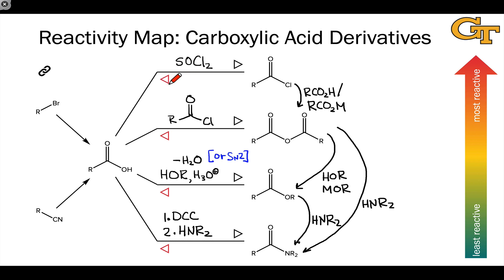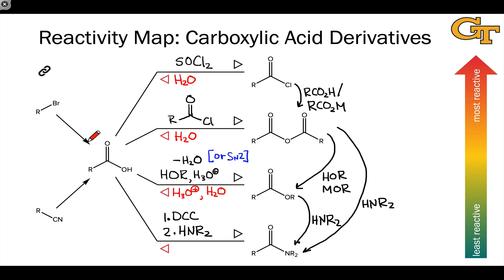What about the reverse directions? From an acid chloride to a carboxylic acid, that's simply water — acid chlorides are sensitive to water and react spontaneously. From an anhydride back to a carboxylic acid, use water, sometimes with an acid or base catalyst. From an ester back to a carboxylic acid, essentially reverse Fischer esterification: catalytic acid with a large excess of water to drive toward the carboxylic acid, removing the alcohol byproduct. To go from an amide back to a carboxylic acid, forcing acidic hydrolysis conditions are required — something like concentrated HCl and heat.